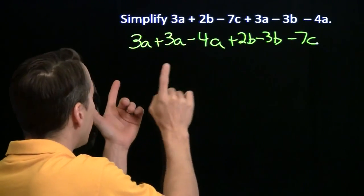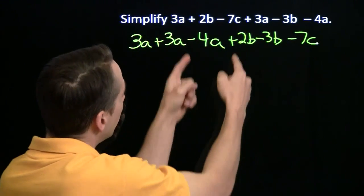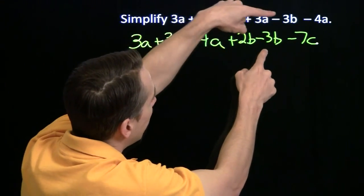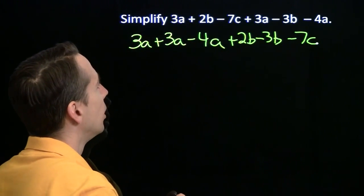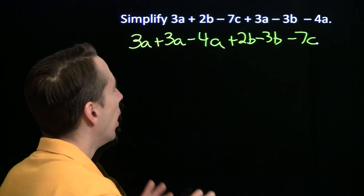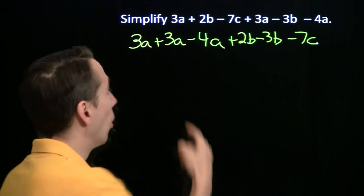Again, we're very careful about our signs. Plus 3a, plus 3a, minus 4a, plus 2b, plus 2b, minus 3b, minus 3b, minus 7c, minus 7c. And I'm a little confused now. I want to make sure I've got all the terms. So sometimes when I have a lot of terms like this, I'll just do a quick count.